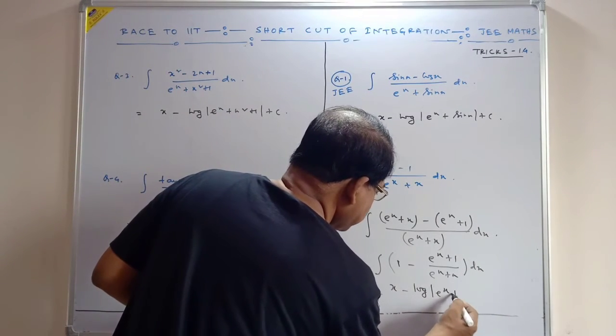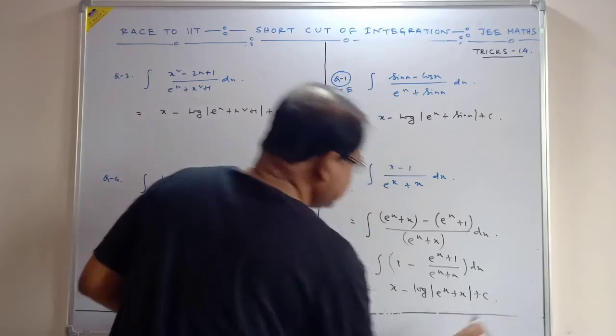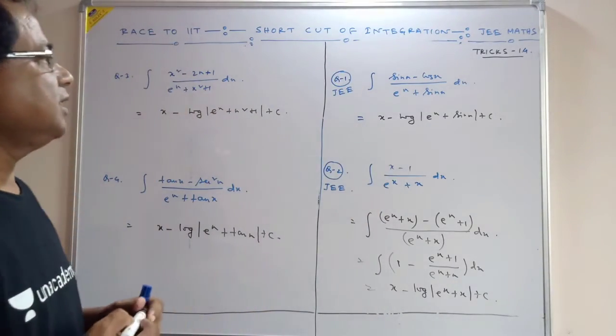So dt by t, that is log t. So this is log of e to the power x plus x plus c.